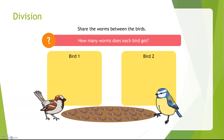One, two, three, four, five, six, seven, eight, nine, ten, eleven, twelve, thirteen, fourteen worms. Share the worms between the birds. How many worms does each bird get?